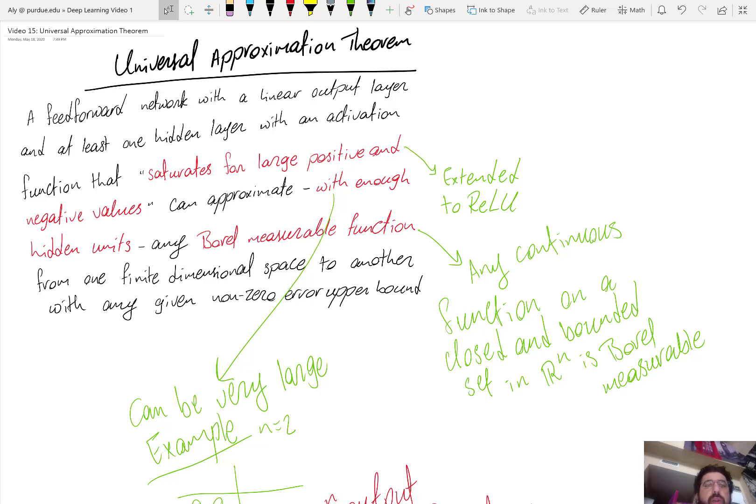Hi everyone, so in this video we'll discuss a theorem that represents one of the major reasons for the motivation and justification of the deep learning approach or the deep neural network approach and that theorem came out in the late 80s.